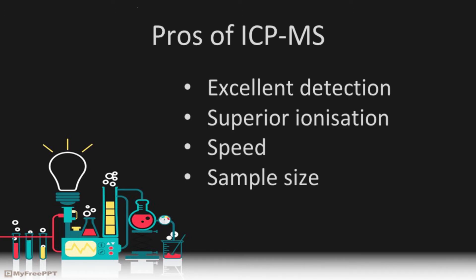Advantages of ICP-MS include excellent detection rates — it can detect concentrations as low as one part in 10 to the 15, or parts per quadrillion, for certain isotopes. Superior ionization: the extremely high energy plasma source provides very thorough ionization, meaning samples are fully decomposed into their constituent elements and converted into ions. Speed: ICP-MS instruments are much faster than other analytical techniques; for example, some instruments can measure around 80 elements in only 3 minutes.